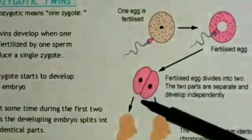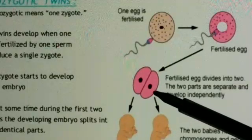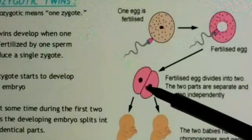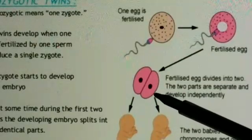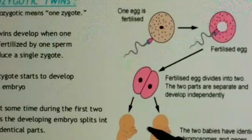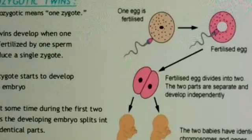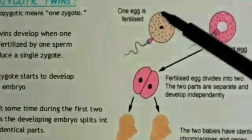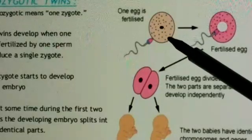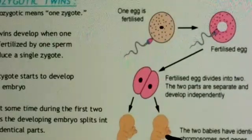After about eight days, this fertilized egg starts developing into two parts — two different embryos begin developing from it. These two independent embryos further develop into two different babies. They have identical chromosomes and genes, meaning both may be boys or both may be girls, with the same chromosomal structure. They develop from a single zygote, which is why they are called monozygotic twins.